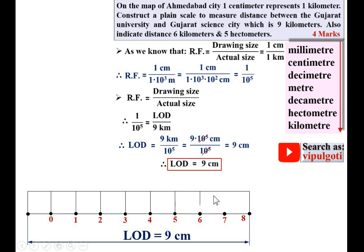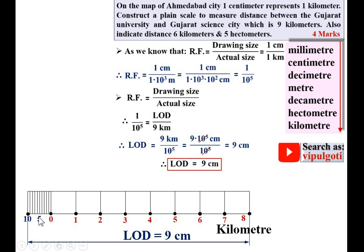Each division represents 1 km. Now divide the first division into 10 equal parts. Number them, writing only 5 and 10 due to space constraints. Each of these sub-divisions is 1/10 of a kilometer, which is 1 hectometer. So each sub-division represents 1 hectometer. The scale is now ready.